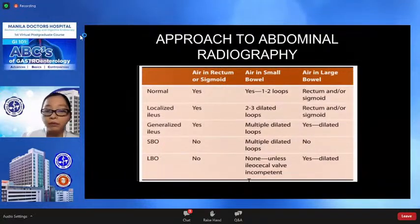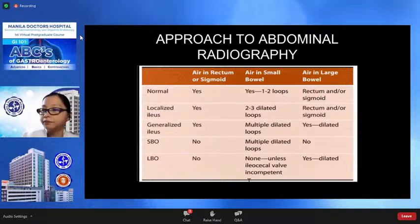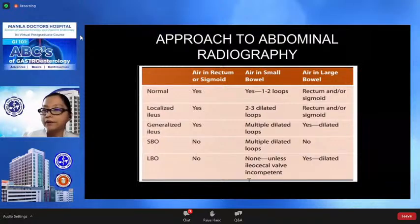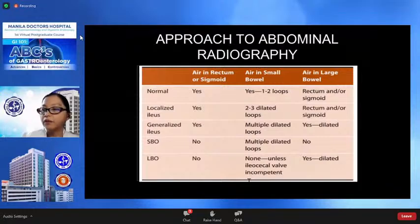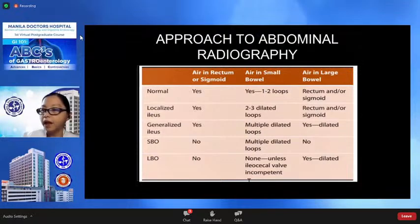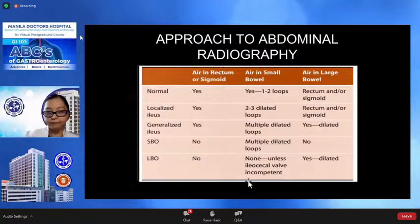Here are some tips on how to interpret a plain abdominal radiograph. A normal radiograph will show air in the rectum, only one to two loops of air in the small bowel, and air or feces in the large bowel. A radiograph of localized ileus will show air in the rectum, about two to three dilated loops in the small bowel, and air in the colon. Generalized ileus will also have air in the rectum, multiple air-fluid bowel loops, and air in the colon. A large bowel obstruction will have no air in the rectum or small bowels, but will show air-distended large bowels.